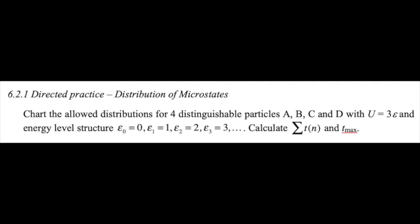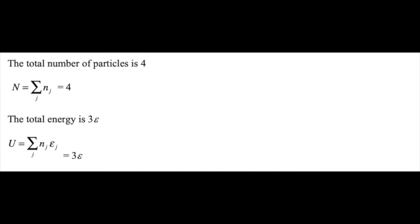So the total number of particles is just equal to four, the summation of all the individual populations of states J. The total energy that's set at three epsilon, it's the summation over the product population times the energy of each one of those states. And that total energy is going to be held constant.